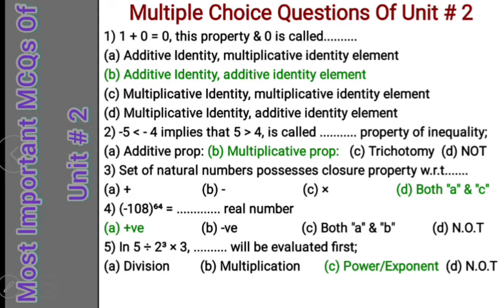Question 2: Minus 5 less than minus 4 implies that 5 greater than 4 — this is called the dash property of inequality. When we multiply minus 5 by minus 1 the result is 5, and when we multiply minus 4 by minus 1 the result is 4. Whenever we multiply both numbers by a negative number, the symbol changes — previously it was less than, now it is greater than. This property is called the multiplicative property of inequality.